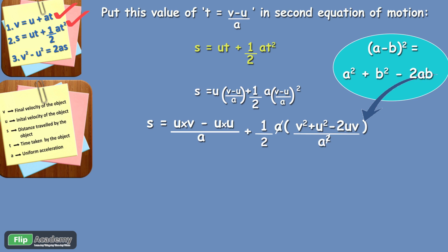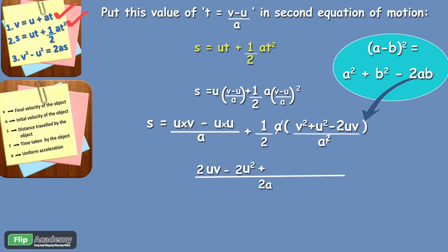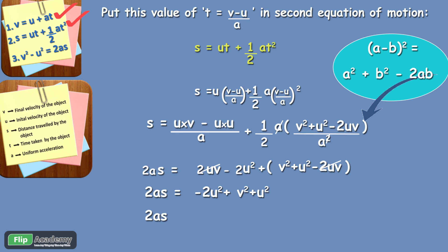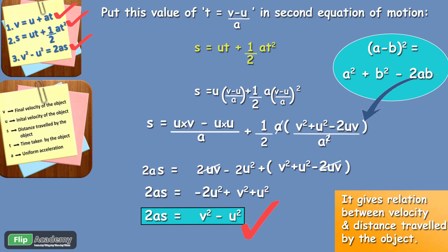Next, we take the LCM of both terms. LCM is 2A. The first term becomes 2UV minus 2U squared, and the second term becomes V squared plus U squared minus 2UV. The terms 2UV and minus 2UV cancel each other. We are left with 2AS equals V squared minus U squared, which gives the third equation of motion: V squared minus U squared equals 2AS. This gives the relationship between the velocity and the distance traveled by the object.